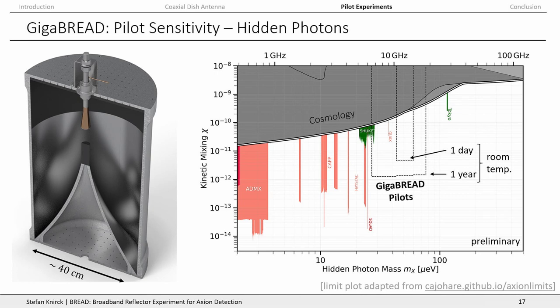Regarding the sharp frequency boundaries on the sensitivity plot: these are set by the maximum bandwidth of the receiver chain and digitizer. To cover more of the frequency range, you scan three months in one band and then three months in the next band, or you use two receiver chains both connected to the same antenna but tuned to different frequency ranges. Ideally we would make this more broadband, but we're limited by the readout hardware.